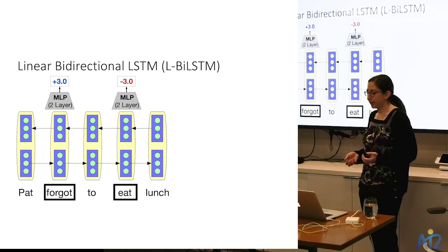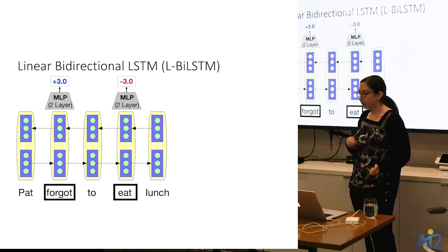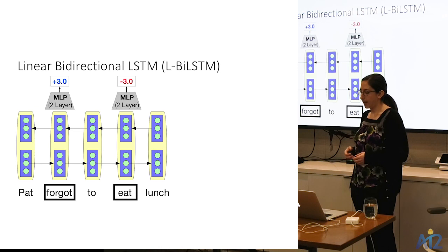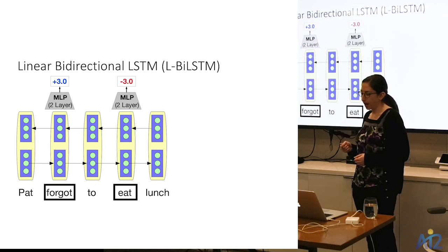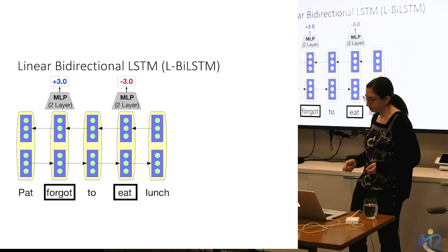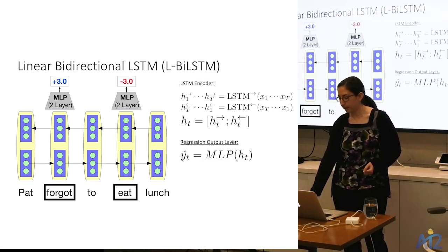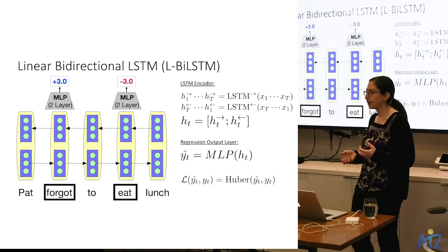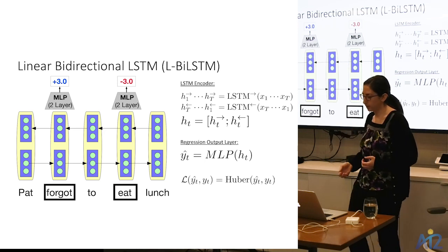The first model is a linear bidirectional LSTM. We run two LSTMs independently over the sentence — one word at a time in the forward direction, one in the backward direction — concatenate the hidden states, select the concatenated hidden states corresponding to words that represent events, and pass those through a multi-layer perceptron giving a regression onto the -3 to +3 scale. We use a bidirectional model because words from any part of the sentence could potentially impact factuality.